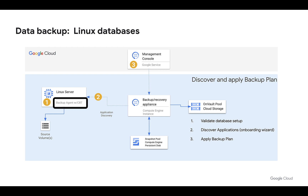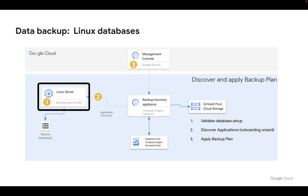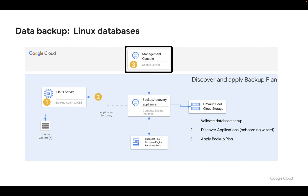We then deploy a backup and DR agent into our Linux servers. That could be a Compute Engine instance or a VMware VM, since this Linux server is running a supported database, or maybe just a file system we want to back up. Once we have installed our backup and DR agent, there are three things to consider: validate the database setup, run a discovery process to add the databases into the service and make them eligible to be protected, and then apply our backup plan so backups will start to run.